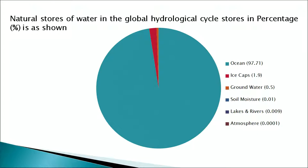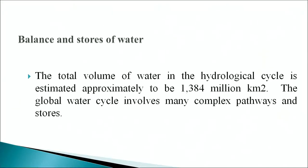The natural stores of water in the global hydrological cycle by percentage are: oceans 97.71 percent, ice caps 1.9 percent, groundwater 0.5 percent, soil moisture 0.01 percent, lakes and rivers 0.009 percent, and atmosphere 0.001 percent. The total volume of water in the hydrological cycle is estimated to be approximately 1.384 million cubic kilometers. The global water cycle involves many complex pathways and stores.